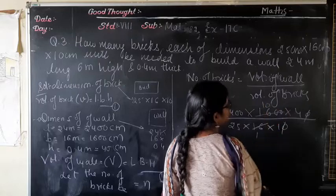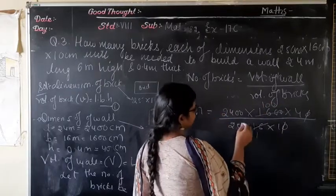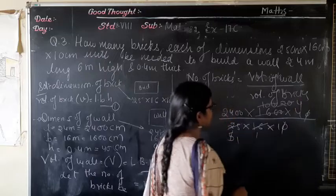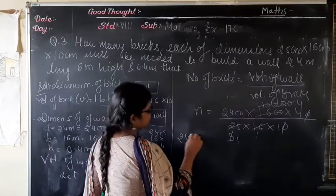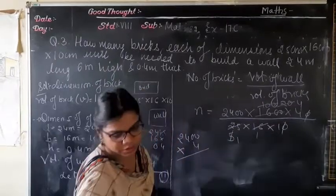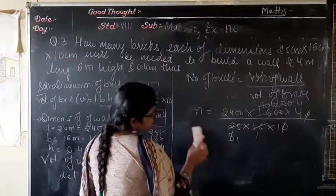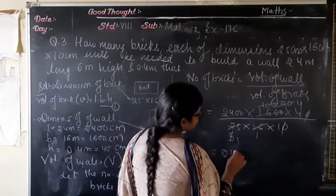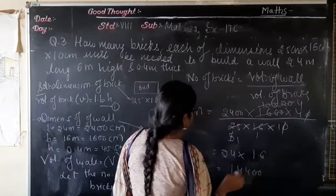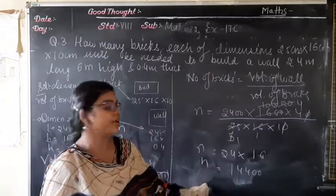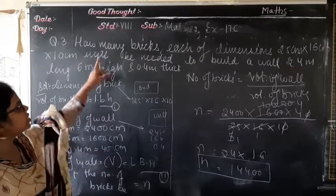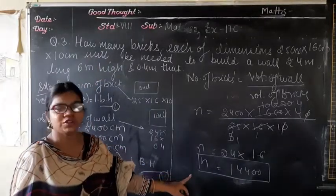Cancelling common factors: 16s cancel, zeros cancel, and simplifying 24 × 4 = 96, then 24 × 16 = 384... On solving, you get 14400. So the number of bricks needed is 14400.